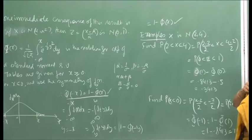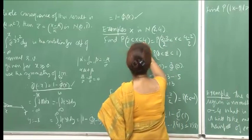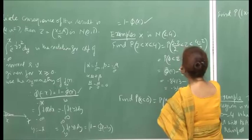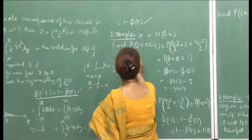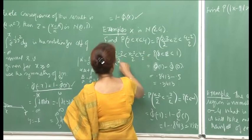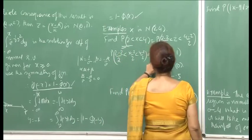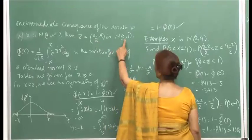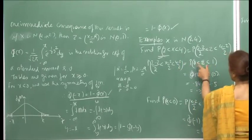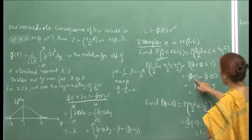Suppose x is N(2, 4), meaning the mean is 2 and the variance is 4. Find the probability that x is between 2 and 4. I will use the transformation: subtract 2 and divide by 2, so this becomes P(0 ≤ Z ≤ 1), where Z = (x − μ)/σ is the standard normal variate. And (4 − 2)/2 = 1. So this probability is Φ(1) − Φ(0).